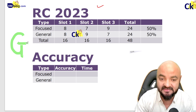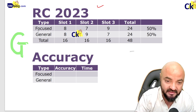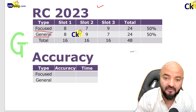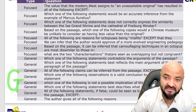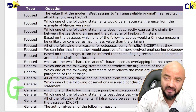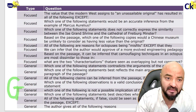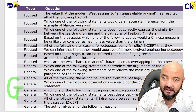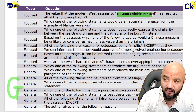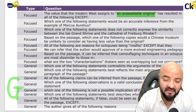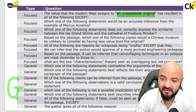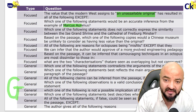Trust me, if you apply this thing your scores will improve. The two types are focused and general. This is the CAT 2022 paper. Focused questions are like: 'The value that the modern west assigned to the unassigned accessible original result in which of the following' - or 'which is probably the most sacred inference for the example of Marcus'.